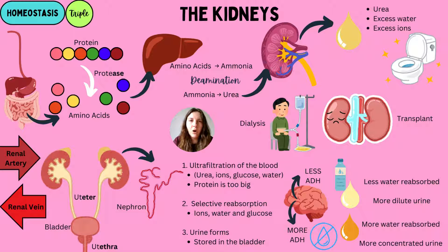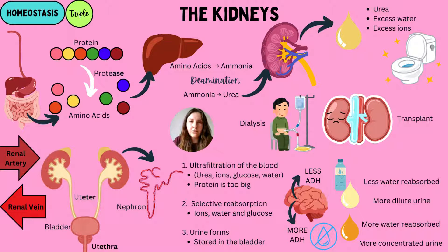Blood enters the kidney through the renal artery under high pressure. There is a microscopic structure called the nephron — there are millions of nephrons in the kidney — and their function is to filter the blood and carry out selective reabsorption. First, ultrafiltration occurs: the blood is filtered for small molecules such as urea, ions, glucose, and water. Proteins are too large to pass through and remain in the blood.